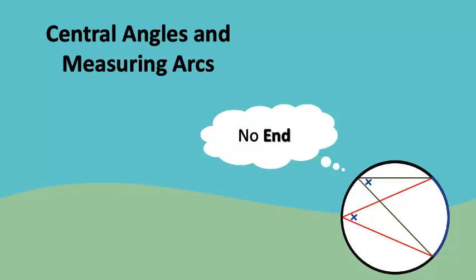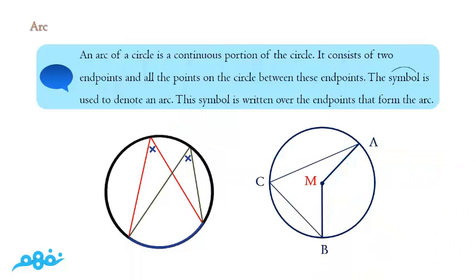First of all, what's meant by arc? The arc is a portion of the circle or a part of the circle which consists of two main points which we call endpoints, like here A and P or A and C.